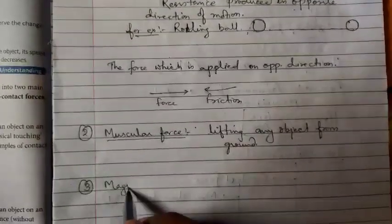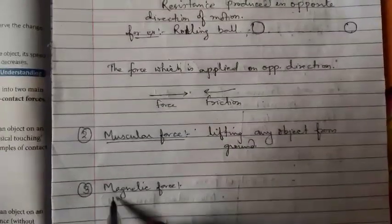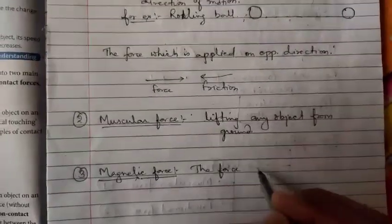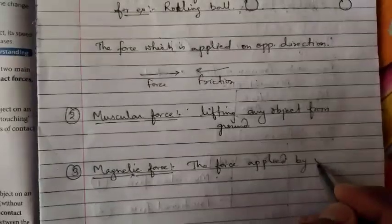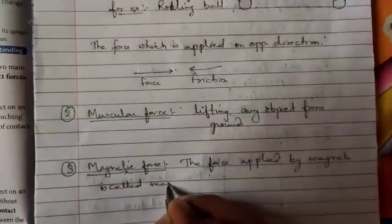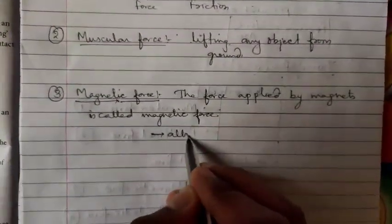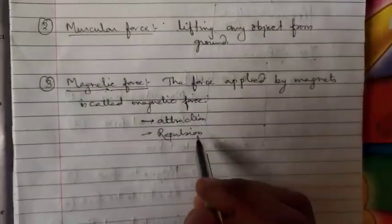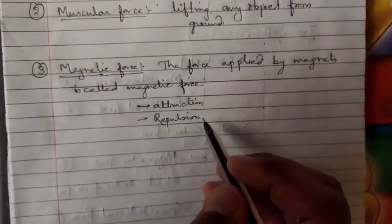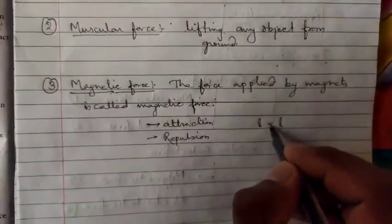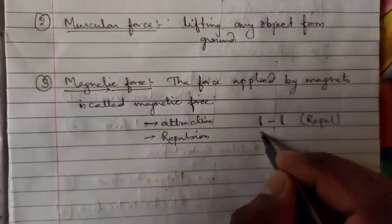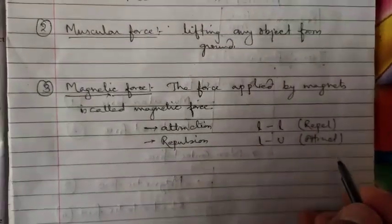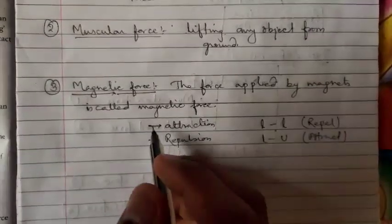The third type of force is magnetic force. The force applied by a magnet is called magnetic force. There are two types of force applied by a magnet: attraction and repulsion. Like poles repel each other and unlike poles attract each other, all without any physical contact. That is called magnetic force.